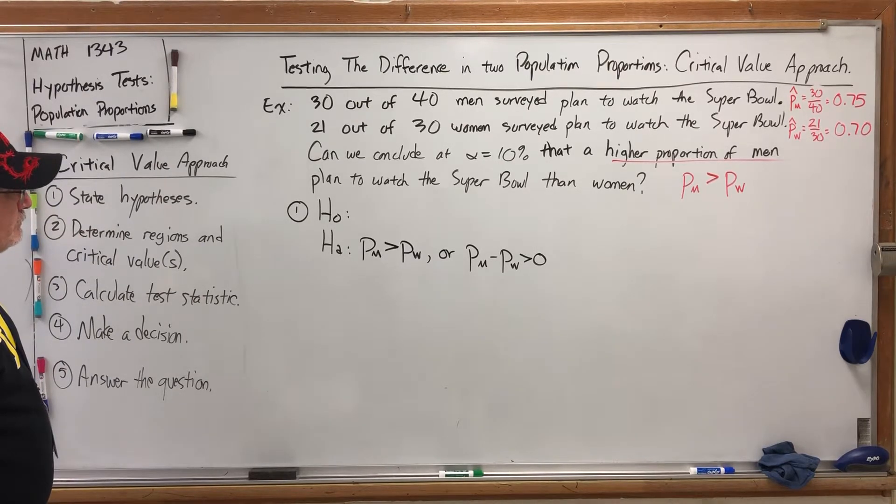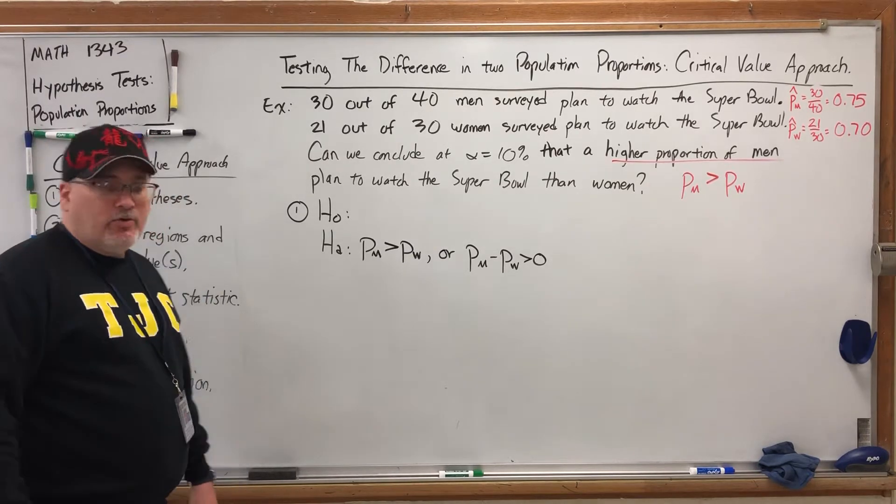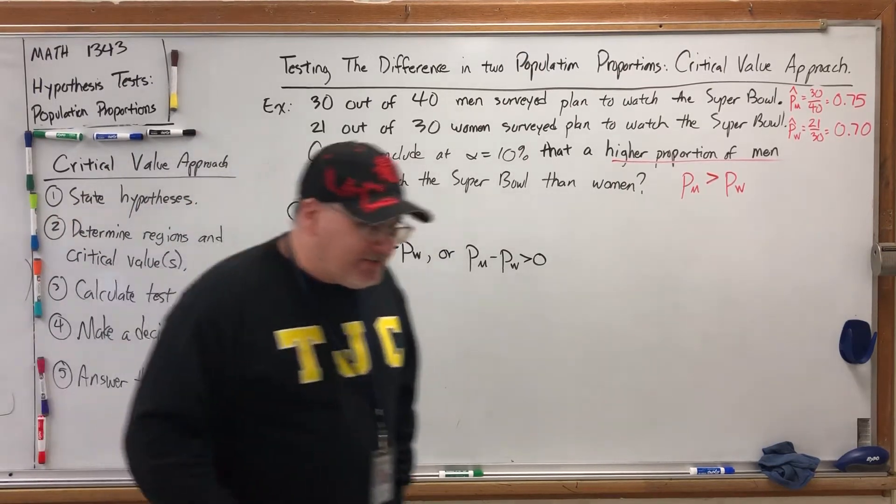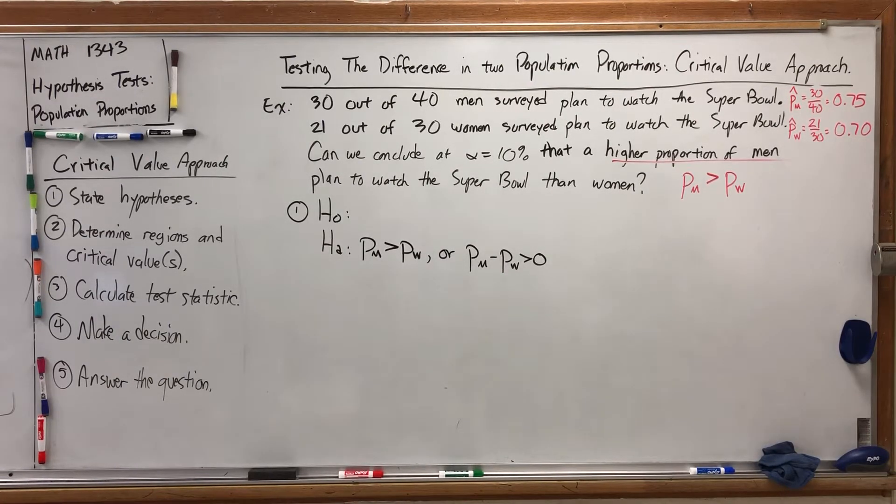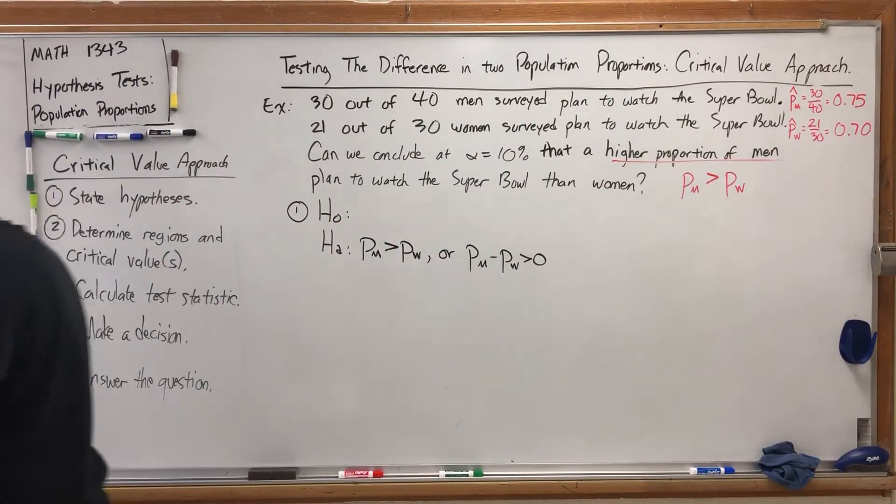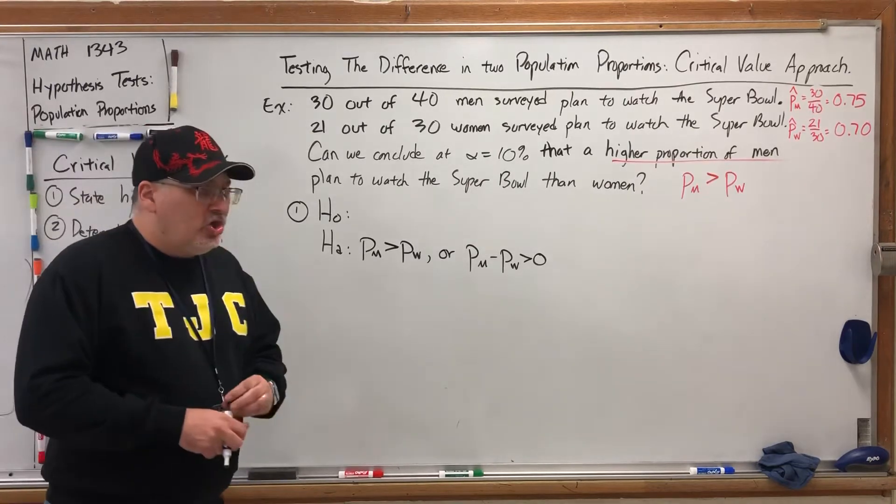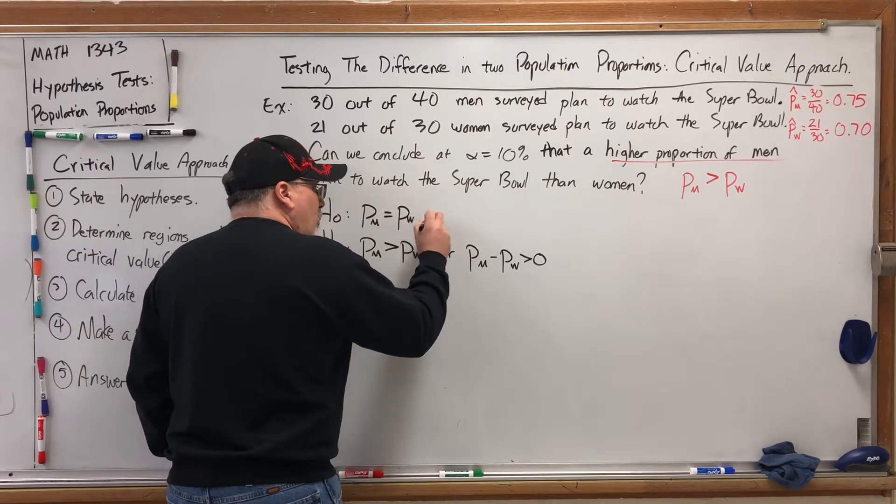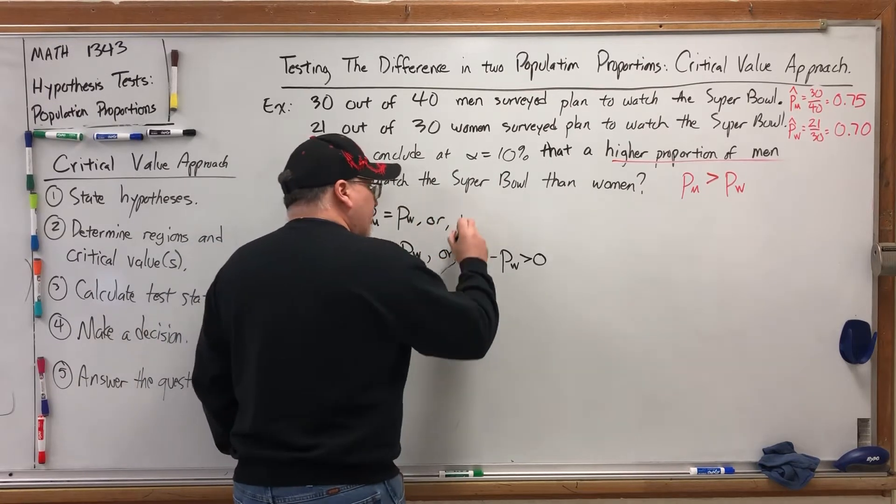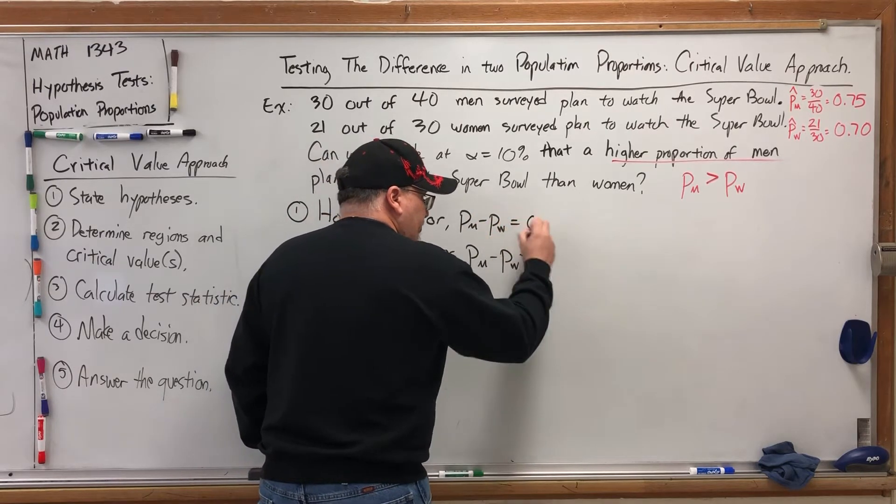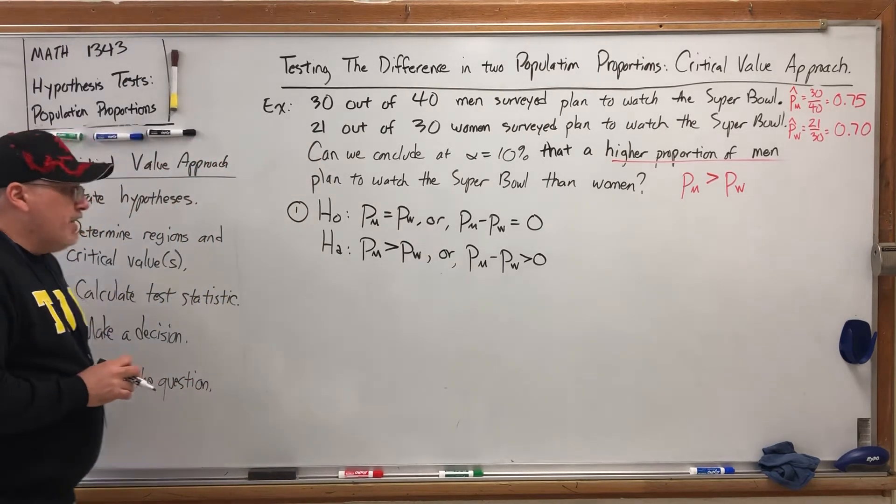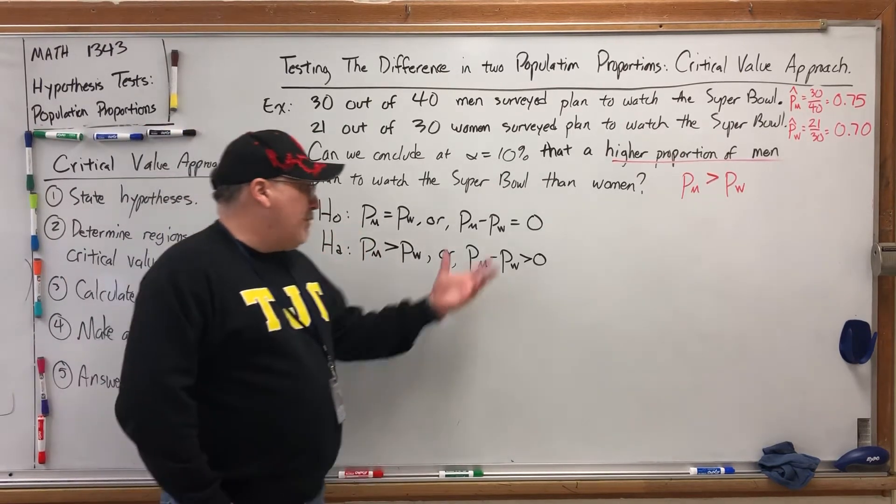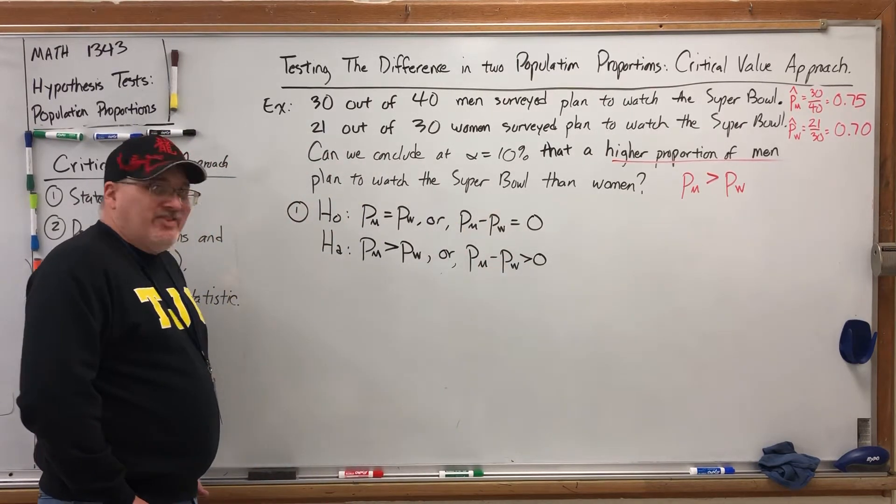But what about our null hypothesis? Nowhere in the statement of this problem is a null hypothesis stated or implied. So what do we do? Well, I'll admit this is the first example where I haven't given you a null hypothesis, but I did state in an earlier video what to do in the absence of a clearly stated null hypothesis. Do you remember what it was? In the absence of a clearly stated null hypothesis, we use equals. So for our null hypothesis, we're going to use that the proportion of men equals the proportion of women, or if you wanted to write it in the context of a subtraction problem, the proportion of men minus the proportion of women is equal to zero. All right, so either way, whether we write the hypotheses in terms of one proportion on one side, one on the other, or the hypotheses in terms of the difference in proportions, these would be good hypotheses for this situation.